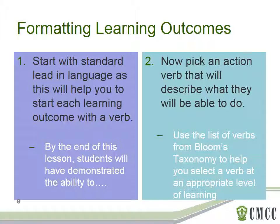When you choose a verb, you want to make sure that it's observable. Often we want to use words like know, comprehend, value, enjoy — all great words, but not things that we can observe our students doing. On the other hand, students can list, create, compare, explain, advocate, and manipulate under guidance — all great choices for verbs to start our learning outcomes as we design evaluation tools to measure their abilities to do these things. If you want a great resource of verbs, check out that document by the British Columbia Institute of Technology.